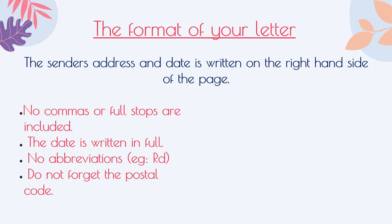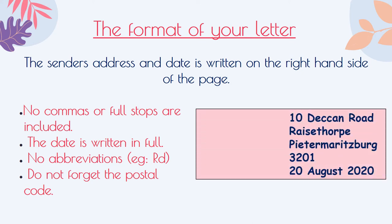The most important element of writing a friendly letter is to get the format correct. A quick tip — you are almost guaranteed marks if you do. You will start off by writing your address on the right-hand side of the page. Your address should be written in full, which means you will have your house number and road on the first line, followed by your area, your city, and postal code. On the next line, you will enter the date in full. If you are writing to someone who lives in another country, you will enter South Africa after your postal code.